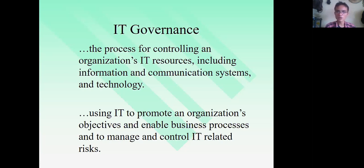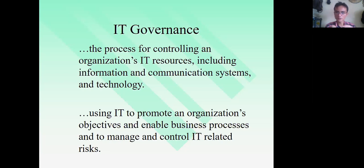The acronym would be P-O-S-D-C: planning, organizing, staffing, directing or leading, and controlling. Controlling deals with feedback. If we talk of financial matters, feedback can be in the form of variances — we compare actual versus standard. The difference is the variance, which can be favorable or unfavorable. If favorable, we continue or sustain and enhance the positive outcomes. If unfavorable, we use the feedback to improve operations and go back to planning.